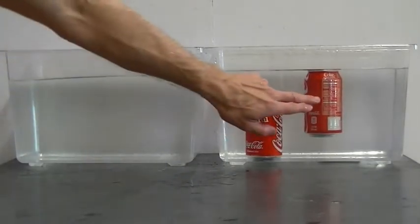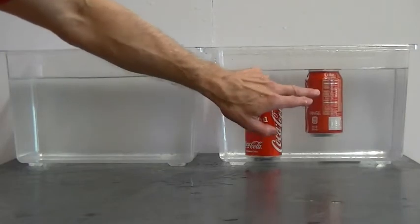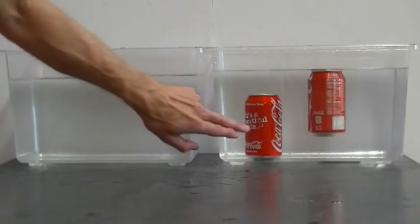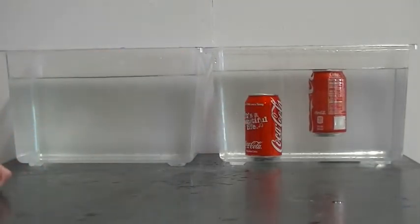So we can see that this can over here is going to float because this can assembly is less dense than the surrounding cool water, whereas this can is still more dense than the surrounding cool water.